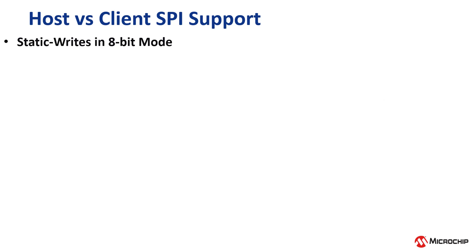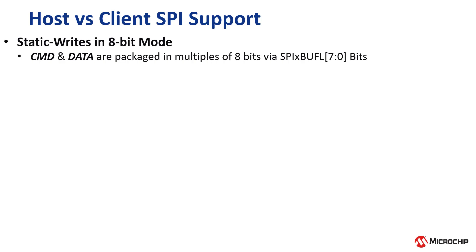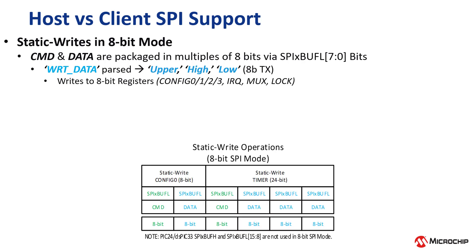Let's start by exploring static write operations in 8-bit SPI mode. In 8-bit SPI mode, command and data must be transmitted in packets of 8 bits via the SPIBuff L[7:0] bits. It should be noted that neither the SPIBuff H[15:0] nor SPIBuff L[15:8] bits are used in 8-bit SPI mode. To achieve proper packet transmission and ensure data alignment, the 32-bit write data variable must be parsed into individual upper, high, and low 8-bit values.